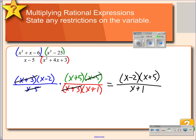So the restrictions on the variable. x cannot equal anything that makes the denominator equal 0. So x cannot equal 5 because of our first fraction. x cannot equal negative 3 or negative 1 because of our second fraction.